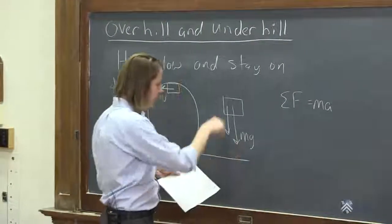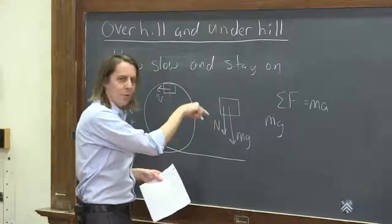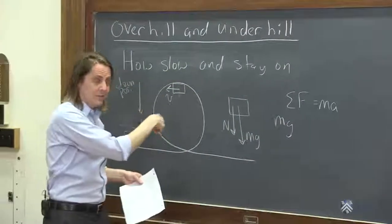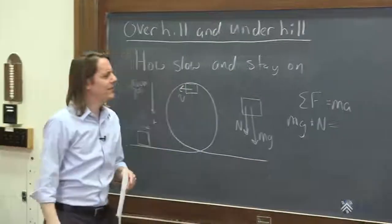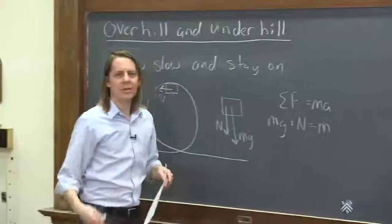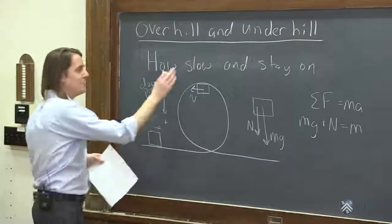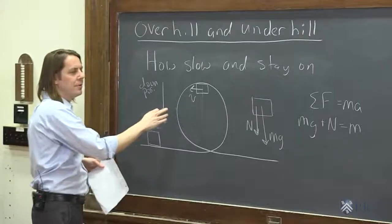So let's add up our forces. We have mg down positive. We have N, the normal force is pushing down, so it's positive. And then we have m, the mass.